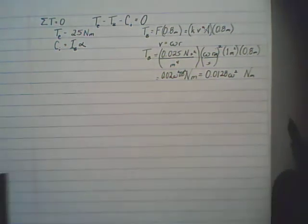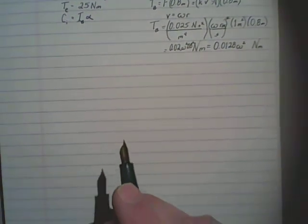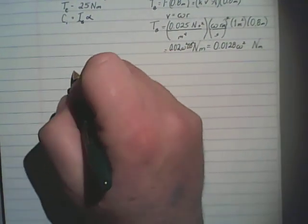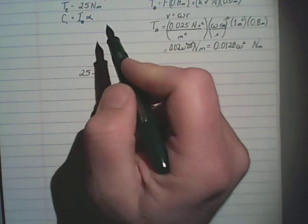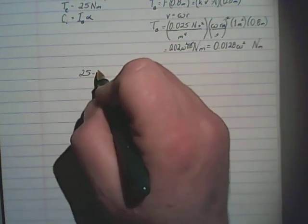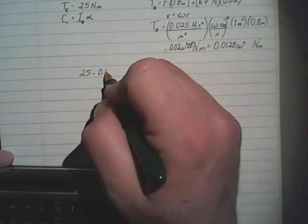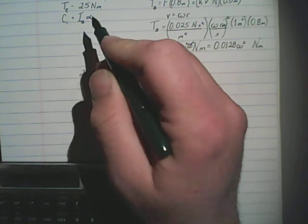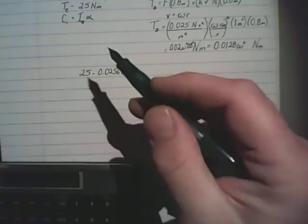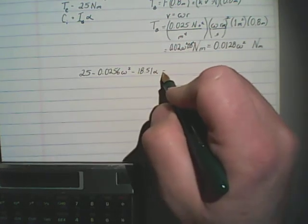So what that tells us is that we can substitute this into the equation and come up with a relationship to let us solve the problem. That relationship is going to be T of the electric motor, 25, minus the blade torque, which we've calculated here. We have two blades, so it will be 2 times 0.0128 omega squared. So 0.0256 omega squared minus I sub G, which if you go back and look at that now, I was 18.51. So minus 18.51 times the angular acceleration is equal to 0.